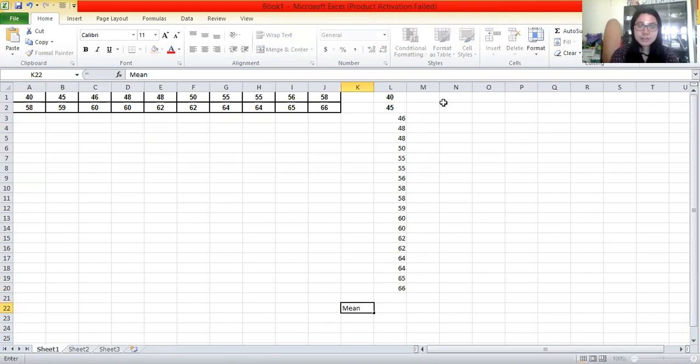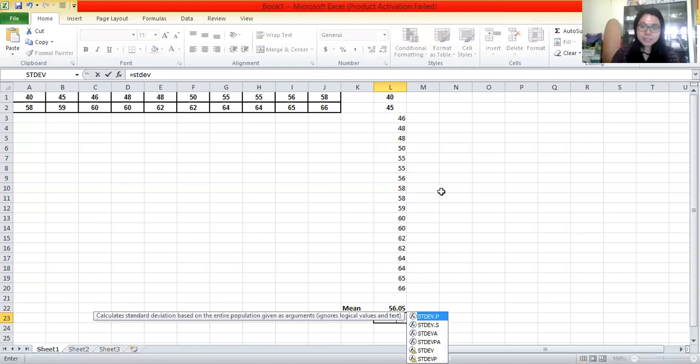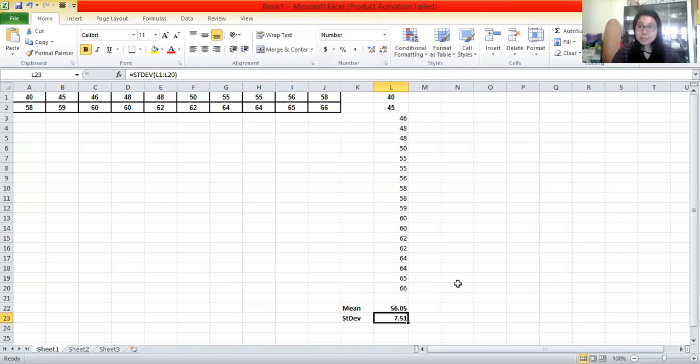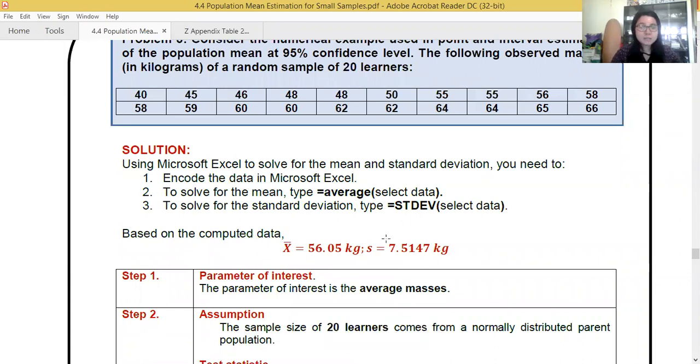Now, let me solve for the mean first, then for the standard deviation. To solve for the mean, the formula is equals average, open parenthesis. You select the whole data, close parenthesis. So our mean is 56.05. Next, for standard deviation. For standard deviation, the formula is equals STDEV. Open parenthesis. Choose the data. Close parenthesis. For standard deviation in two decimal places, we have 7.51. So we go back to our lecture notes here. I have it in four decimal places to make it more accurate. But you can have it in two decimal places. No problem.